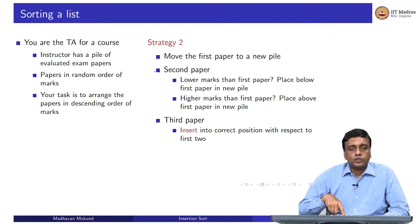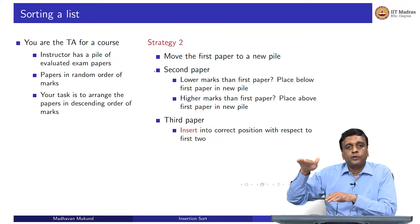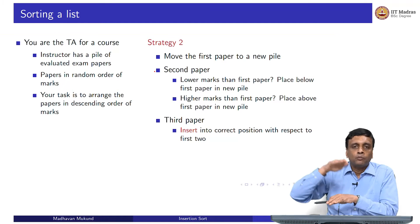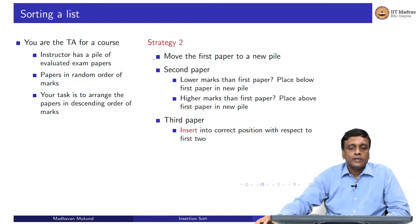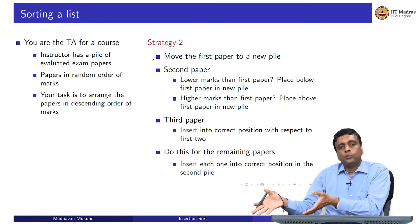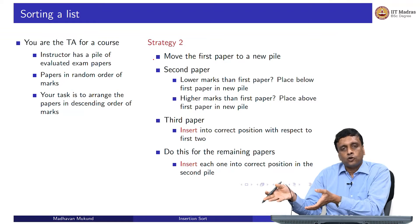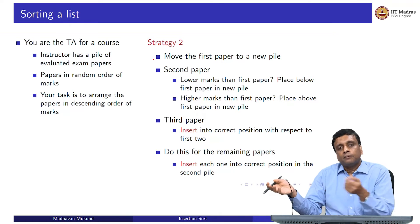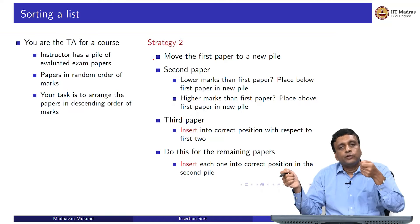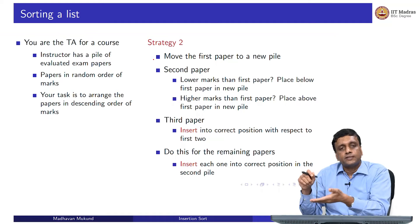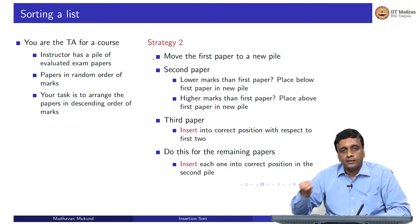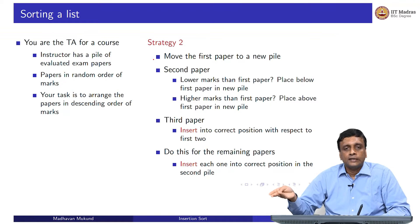If you come to the third paper, there are three possibilities: paper three could go below both of them, above both of them, or in between, depending on its value. In general, you have to keep doing this for every paper. For every paper, you take the new pile which is already sorted, and in order to maintain the sorted property, you cannot just dump it on top as you did in selection sort — you have to find the correct position to insert. That is why this is called insertion sort, because every time you have to insert the next value into the sorted list you are creating.